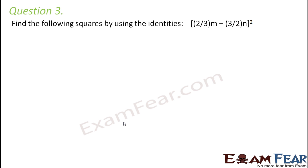Question number 3: Find the following squares by using the identities. Here you have (2/3·m + 3/2·n)². It is of the form (a + b)² = a², that is (2/3·m)², plus b², that is (3/2·n)², plus 2·a·b.